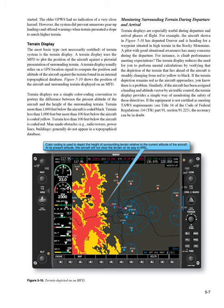Monitoring surrounding terrain during departure and arrival: terrain displays are especially useful during departure and arrival phases of flight. For example, the aircraft shown in Figure 5-10 has departed Denver and is heading for a waypoint situated in high terrain in the Rocky Mountains. The terrain display reduces the need for you to perform mental calculations by verifying that the depiction of the terrain ahead is steadily changing from red to yellow to black. If the terrain depiction remains red as the aircraft approaches, you know there is a problem. Similarly, if the aircraft has been assigned a heading and altitude by ATC, the terrain display provides a simple way of monitoring the safety of these directives. If the equipment is not certified as meeting TAWS requirements, see 14 CFR Part 91, Section 91.223 — the accuracy can be in doubt.